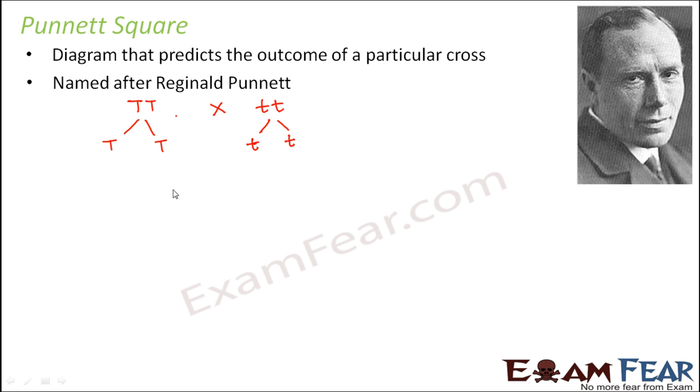Now what we do is we write the gametes, the male gametes and the female gametes on the top and side of the table. So let us suppose if I write the male gametes here, the female gametes here, I am just calling them male and female. So this is how I am writing it and this is the Punnett Square. So this is how a Punnett Square looks like.